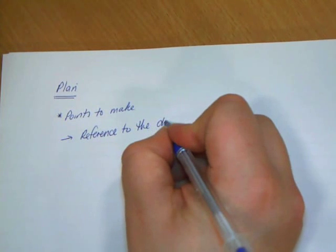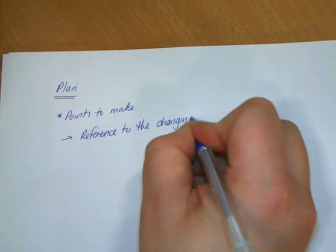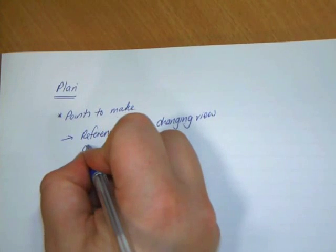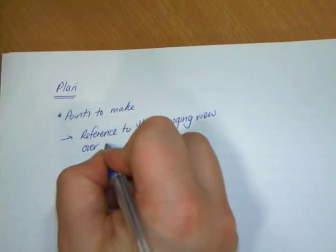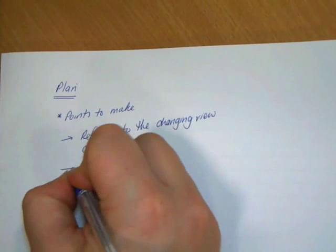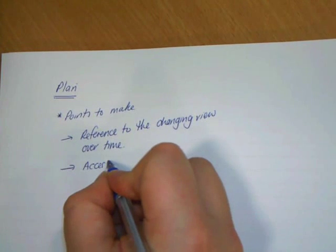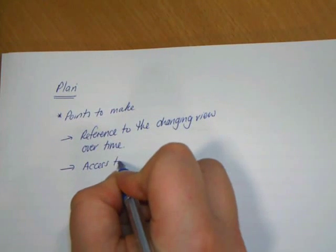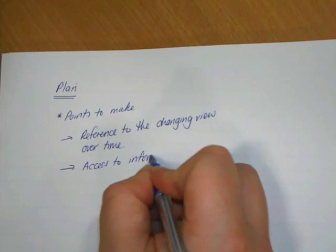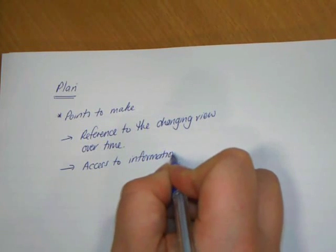In this case, what you've got to look at is: going back to the question, this is going to have to have some reference to the changing view over time — it's one of the key things the question is asking. You've got three sources from three separate points in the war, so the clues are all there for you to find within the question.